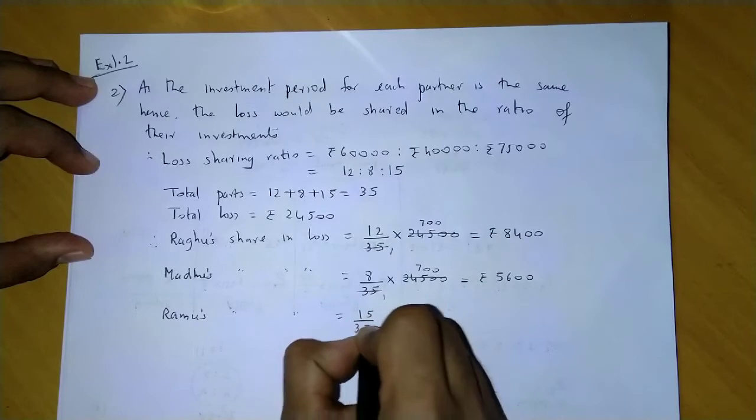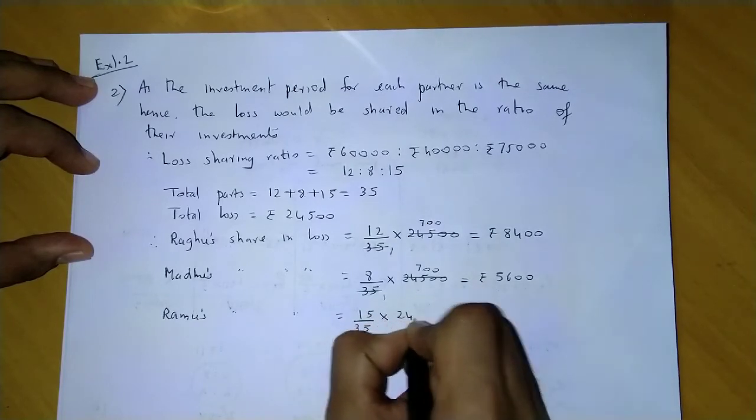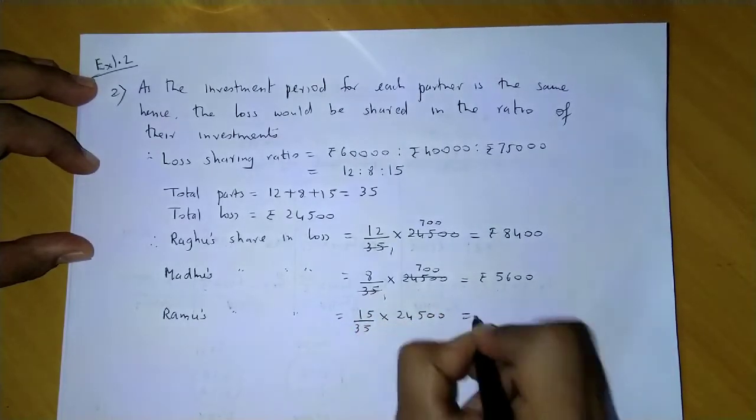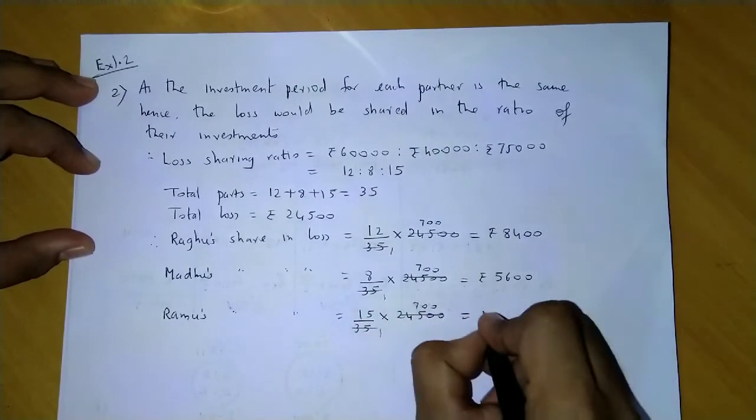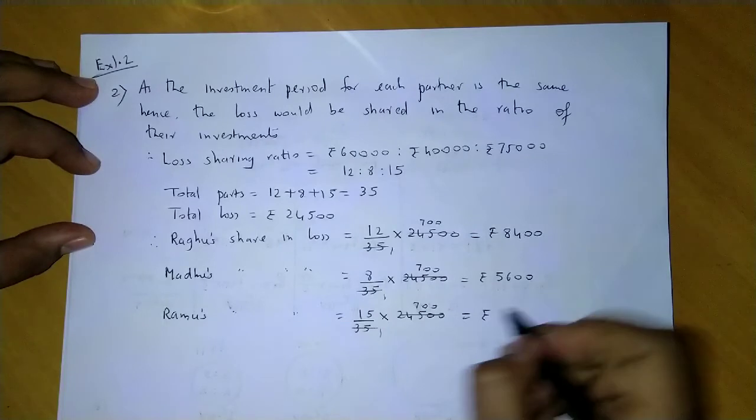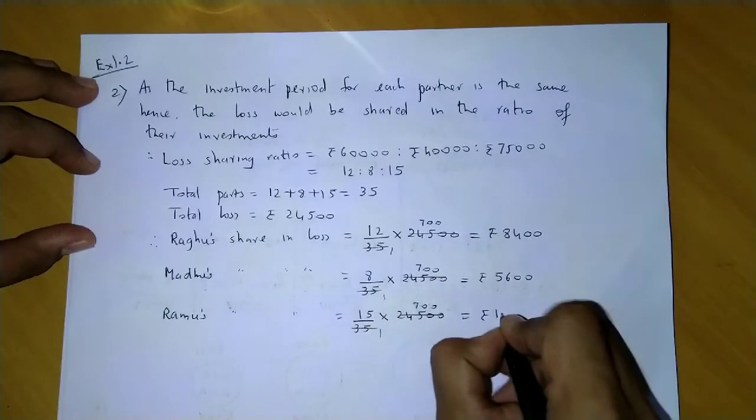Again if we cut this, you get 700. And if you multiply this, the answer would be 5,600.